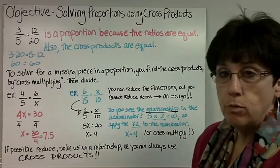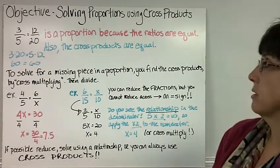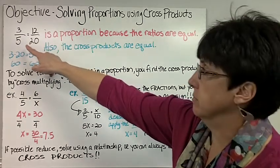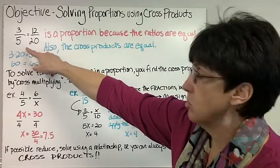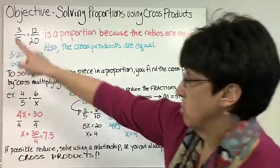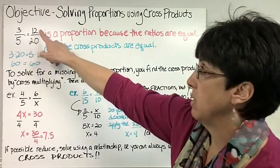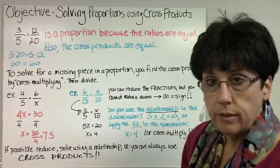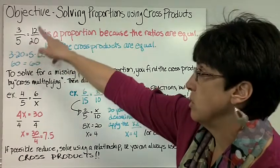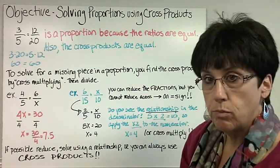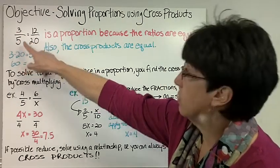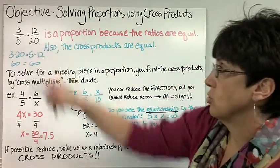Today's objective is solving proportions using cross products. This is a proportion. It compares two equal ratios. So 3 over 5 is the same as 12 over 20. However, if we were going to read it, we wouldn't say 3 fifths equals 12 twentieths. That's not how you read a proportion. You read a proportion saying 3 is to 5 as 12 is to 20.